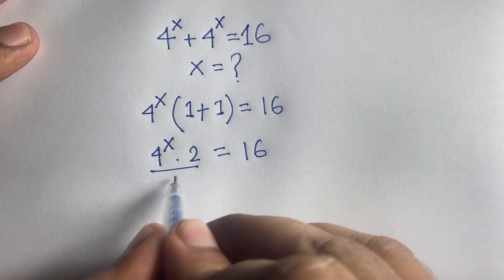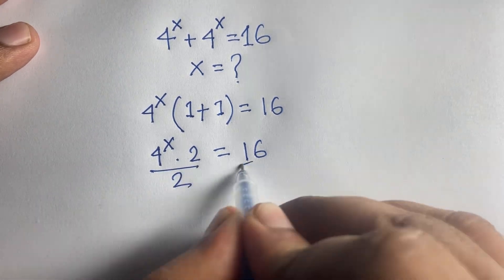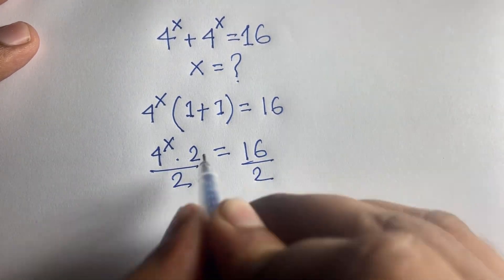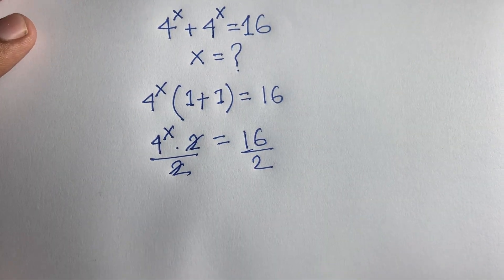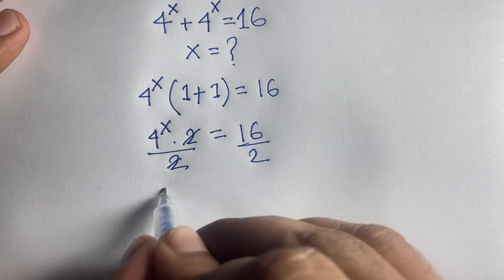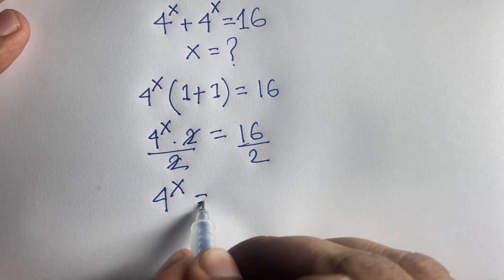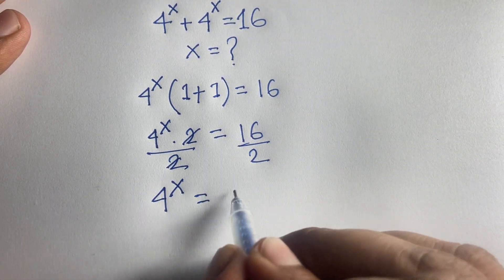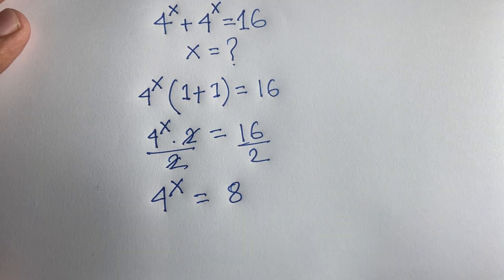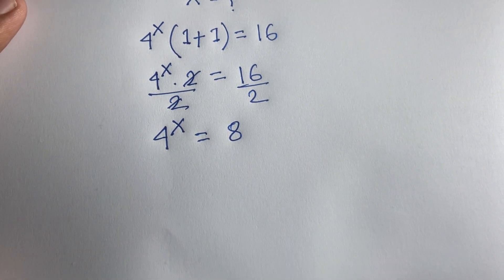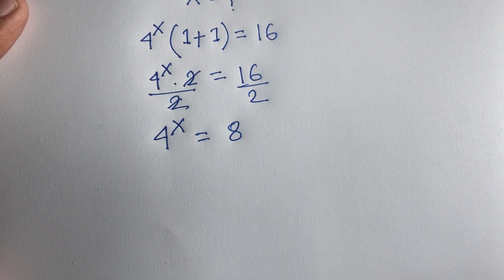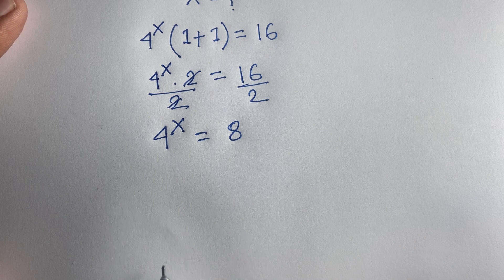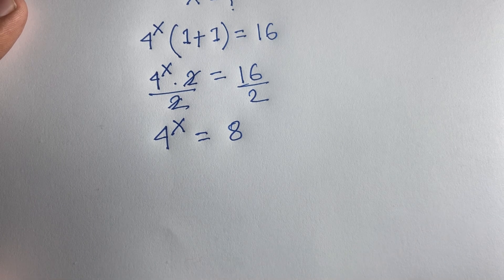So 4 to the power x times 2 is equal to 16. Then I divide both sides by 2, the 2 cancels, and we find that 4 to the power x is equal to 16 divided by 2, which is 8.